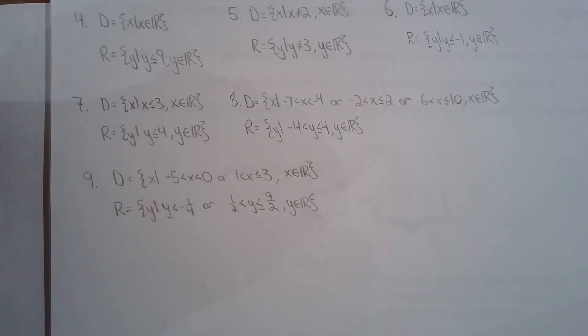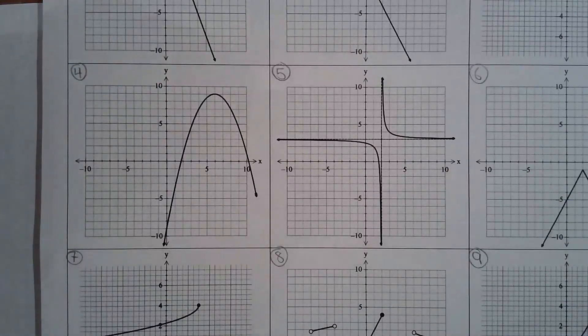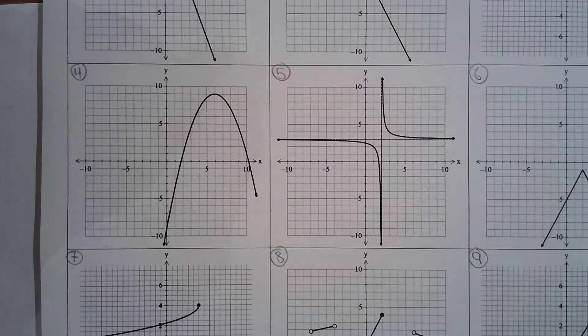So there's your domain and range, and this is all from the graph of the relation. In fact, all of these are examples of functions because all nine graphs pass the vertical line test. So hopefully you're really good at coming up with the domain and range from the graph.